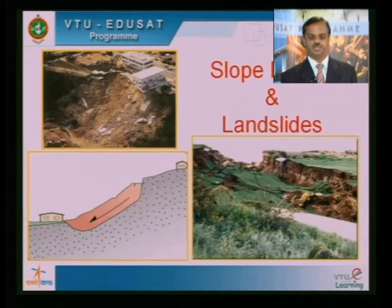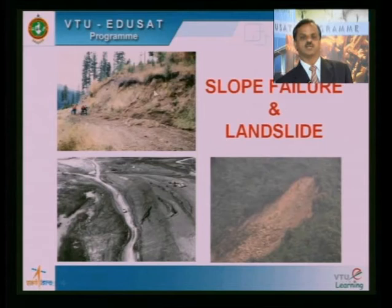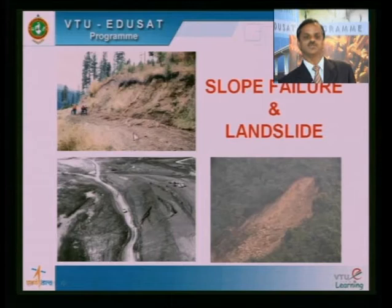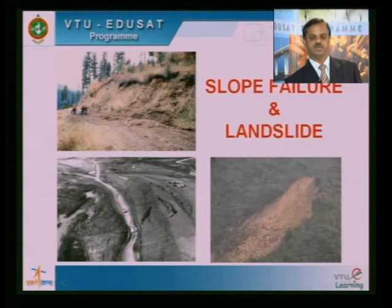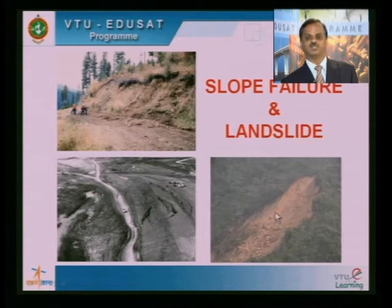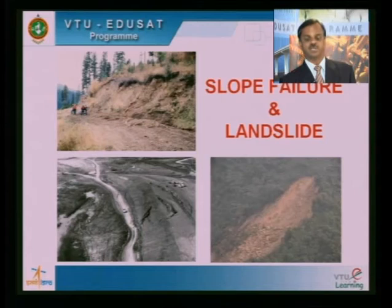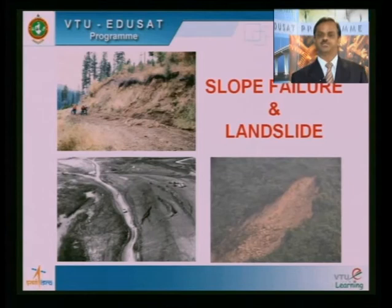Pictures of slope failures show a mass of soil having come down, putting roads in trouble. In an aerial view, an entire slope can be disturbed, with a mass coming down and uprooting all vegetation. If there were buildings there, they would have been totally unstable. Keeping slopes stable and maintaining their intact nature is one of the objectives of a geotechnical engineer.